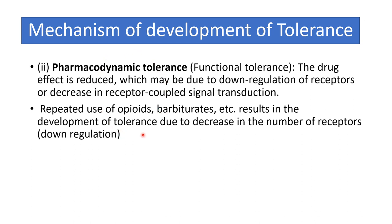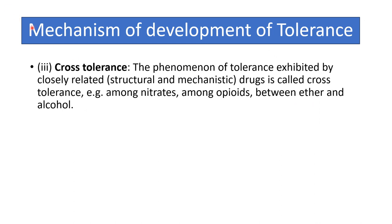Cross tolerance: the development of tolerance between related drugs is called cross tolerance. Examples include tolerance among nitrates, among opioids, and between ether and alcohol.